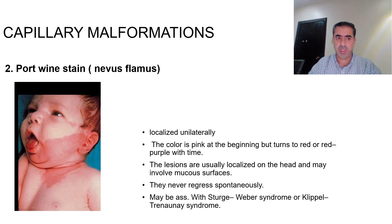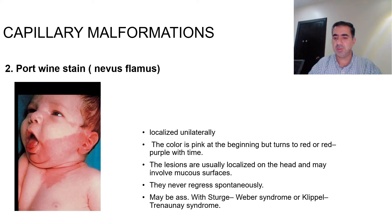The second type of capillary malformation is nevus flammeus, or the port wine stain. It is localized unilaterally, contrary to nevus simplex which is in the center. The color is pink at the beginning but turns to red or red-purple with time. Lesions are usually localized on the head and may involve mucous surfaces. They never regress spontaneously and may be associated with Sturge-Weber or Klippel-Trénaunay syndromes.